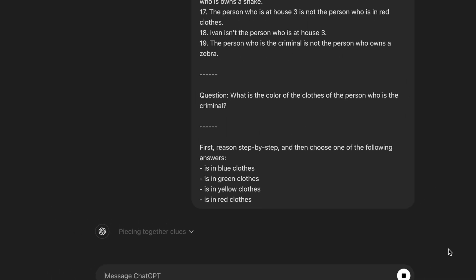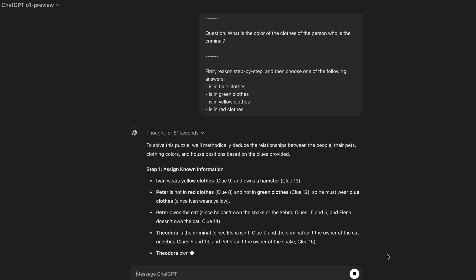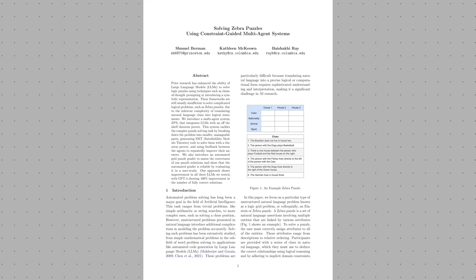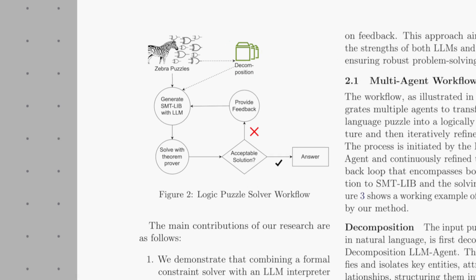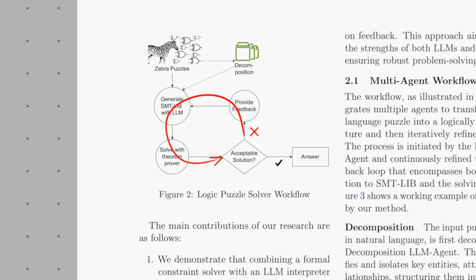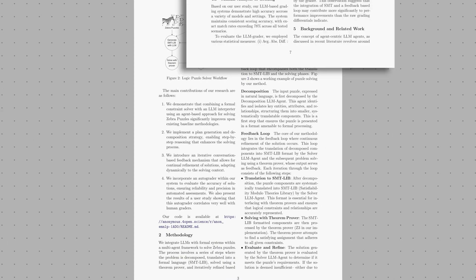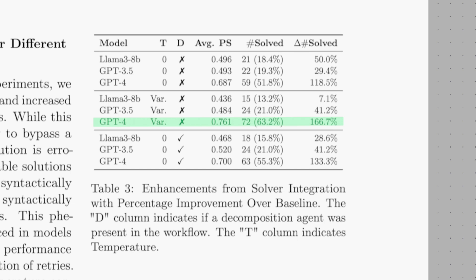Besides chain of thought, there are also more targeted approaches that integrate constraint satisfaction into the model's generation process. This recent preprint from Princeton and Columbia presents a constraint-guided system to deal with zebra puzzles — another name for Einstein's riddles. They first use language models to decompose the puzzle into smaller manageable components and translate those into a formal language. Then they use a theorem prover to assign values that satisfy the puzzle's constraints, and another language model evaluates these assignments. If any errors are detected, the process is repeated, creating a feedback loop for continuous refinement. This approach allowed their best performing model to solve 76.1% of the puzzles — better than anything we've seen so far.